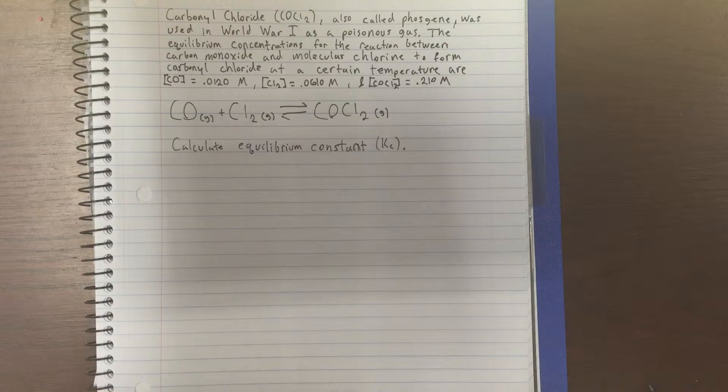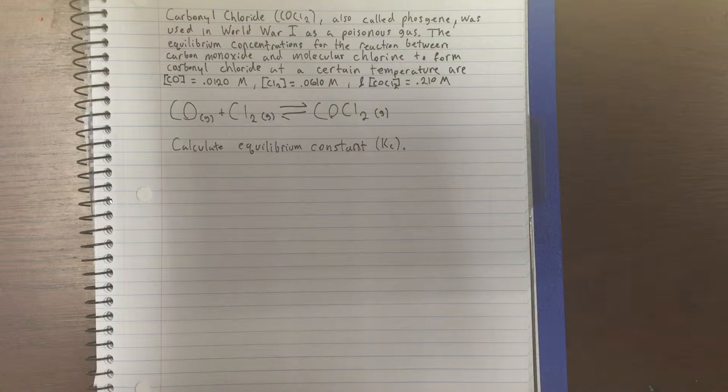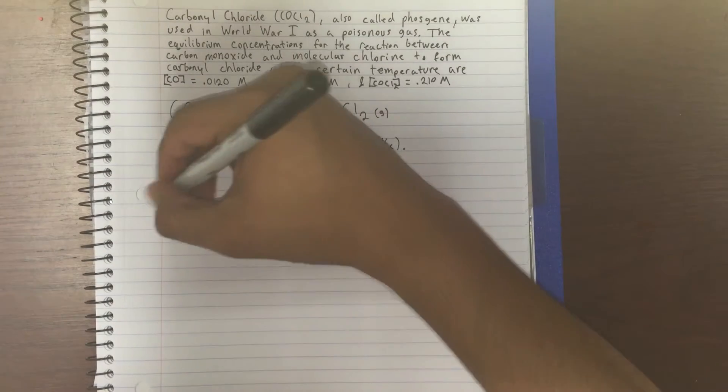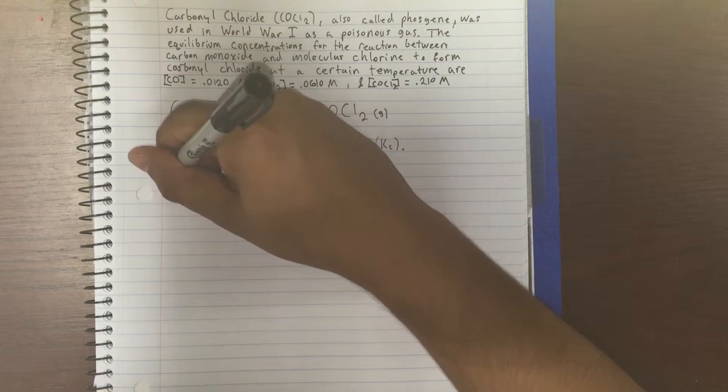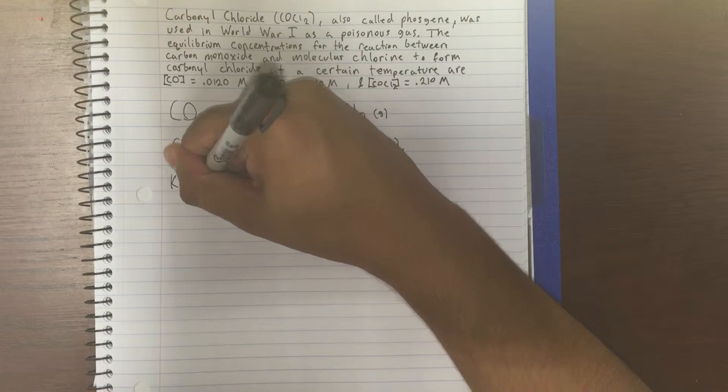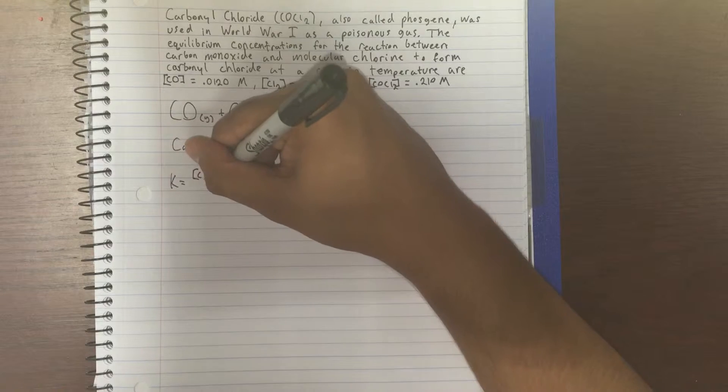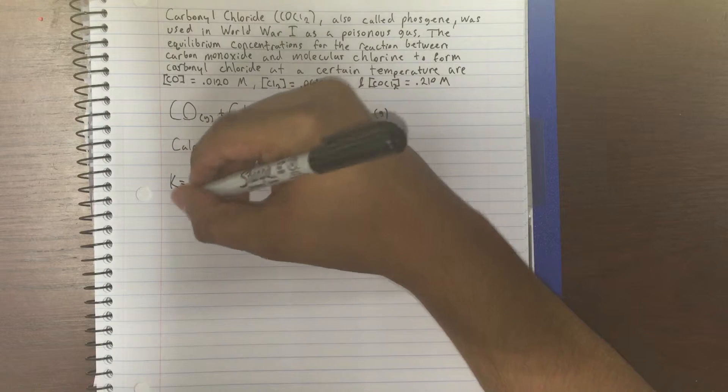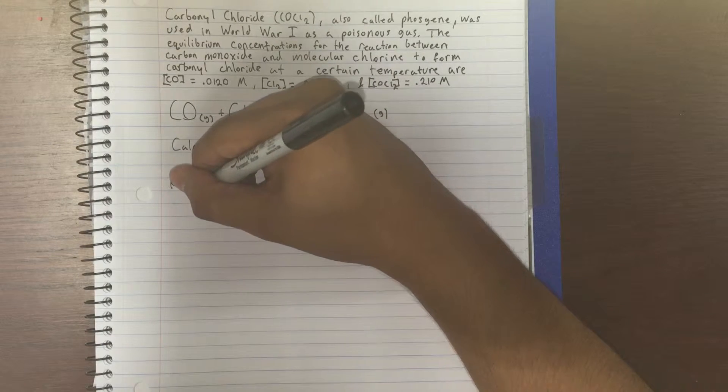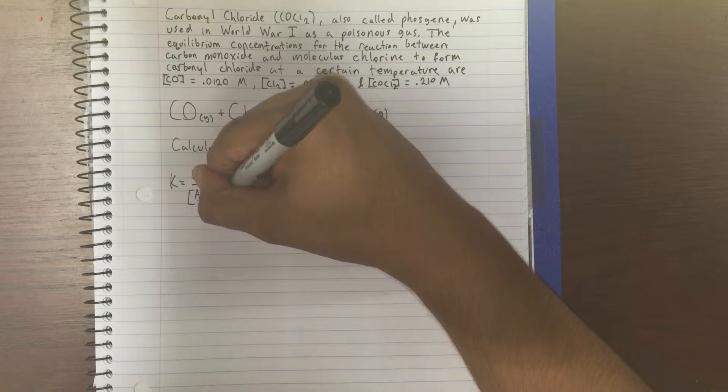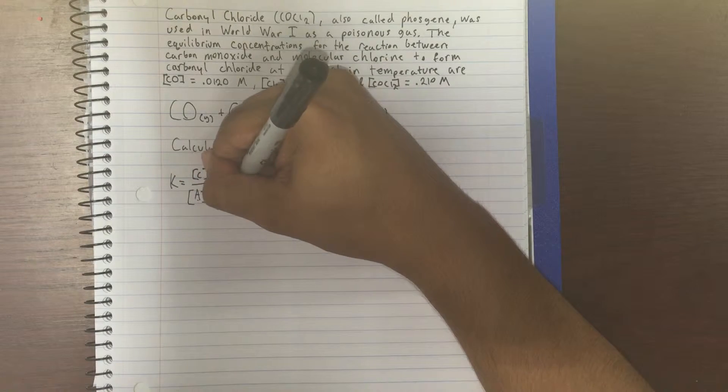Now it asks us to find the equilibrium constant. When finding the equilibrium constant for certain concentrations or for equilibriums in general, the formula would be K equals concentration of C raised to the exponent c times D raised to the exponent d, over A raised to the exponent a and B raised to the exponent b.